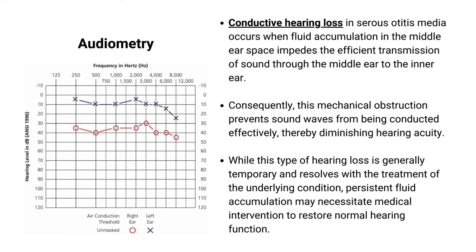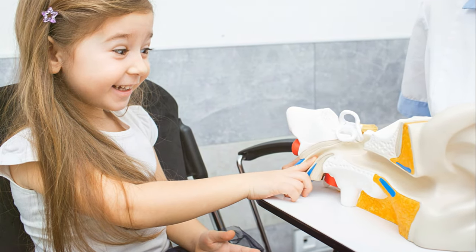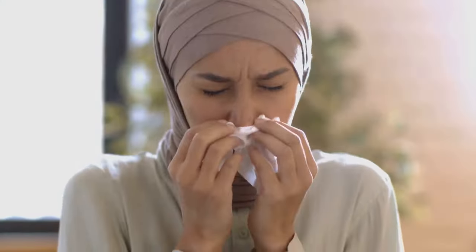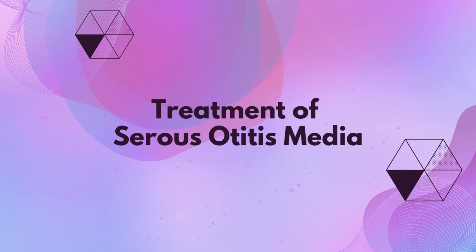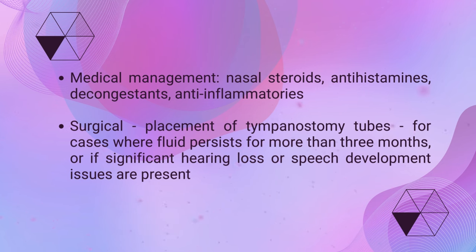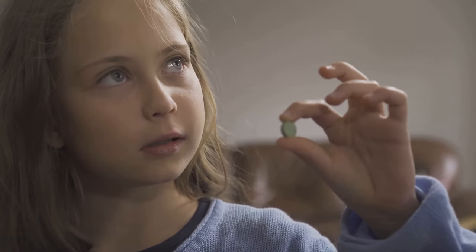Early detection of serous otitis media can prevent long-term impact on a child's hearing ability and overall well-being. Treating serous otitis media is possible and often straightforward, with a focus on managing the underlying causes. Many cases resolve spontaneously within a few weeks to months, and regular monitoring is essential during this period. The therapy aims to alleviate symptoms, improve eustachian tube function, and prevent complications such as hearing loss. The most important consideration is to address the root causes — for instance, if allergies are a contributing factor, managing them through medications or lifestyle changes could alleviate symptoms. Nasal steroids and antihistamines may be prescribed to reduce nasal congestion and inflammation, improving eustachian tube function, though these should be used with caution due to potential side effects.